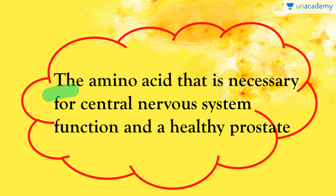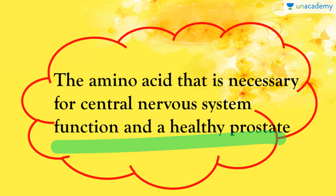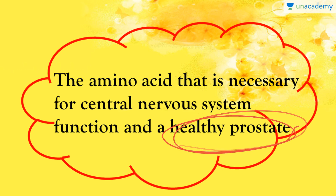Glycine is the amino acid which is necessary for our central nervous system — meaning our brain — and for a healthy prostate. The prostate is a gland present in males with a very important function in the male reproductive system. So glycine is the amino acid which deals with the health of the prostate gland, meaning any male with a proper content of glycine will have very good reproductive health.